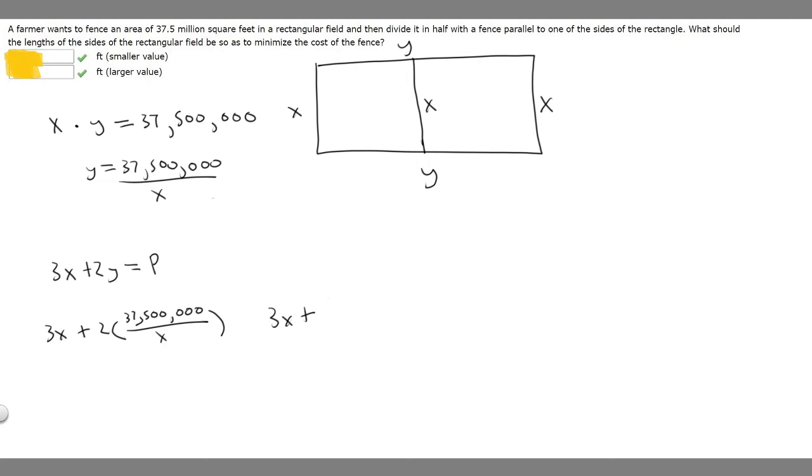So we have 3x plus 75,000,000 over x. But I'm just going to write that as 75,000,000 times x to the minus 1. So this is basically this just represented with only x's.